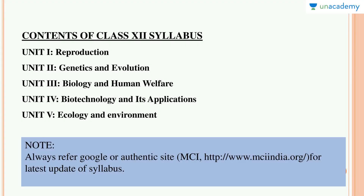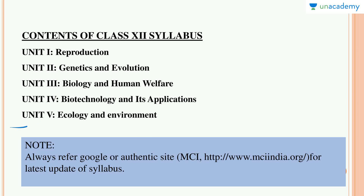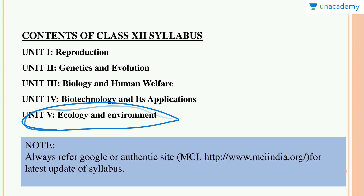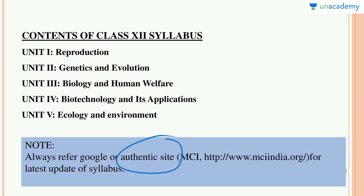Let's start with the contents of the Class 12 syllabus. Unit one is Reproduction, then Genetics and Evolution, Biology and Human Welfare, Biotechnology and its Applications, and Ecology and Environment. These are five units — Unit 5 is five-star, very very important. Always go through authentic sites for the latest syllabus updates, as topics keep changing — parts may be deleted or added.